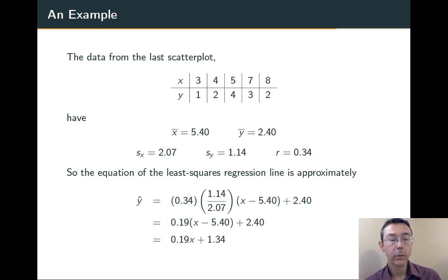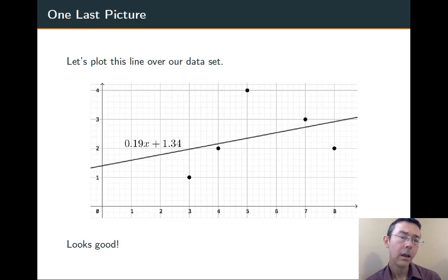We can plug in all those values. We get that the equation of the least squared regression line is 0.19x plus 1.34. Now, all these values are a real pain to calculate by hand. I definitely recommend using technology to do these, in particular r. Here's what that line looks like. Looks like a pretty reasonable fit to this data.